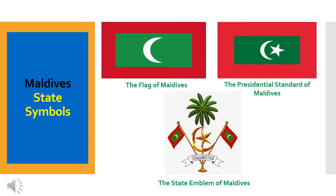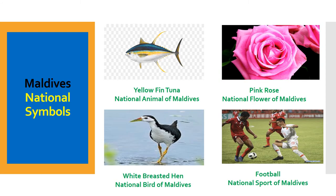Here are the three very important state symbols of Maldives. These are: the flag of Maldives, the flag of the President of Maldives, and the state emblem of Maldives. Yellow fin tuna is the national animal of Maldives.